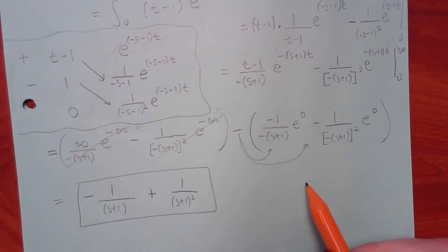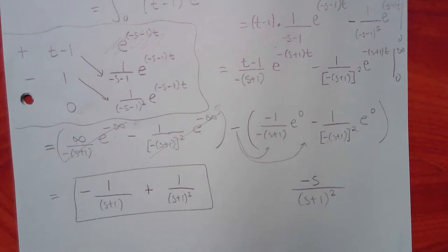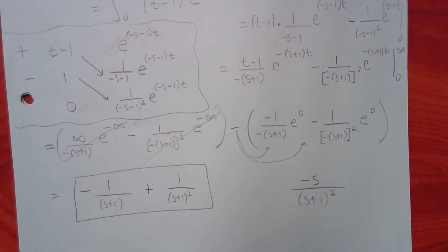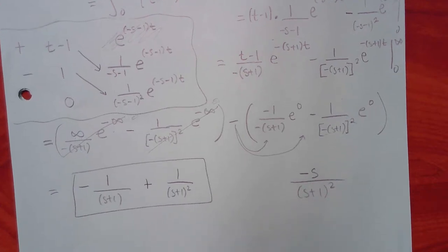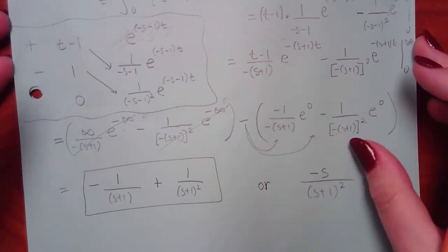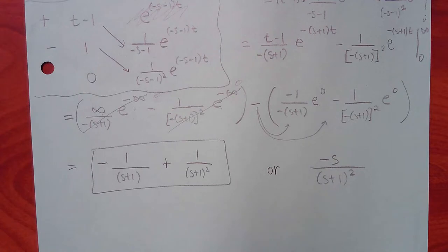Another equivalent form of the answer would be negative s over (s plus 1) squared. You multiply the first term by (s plus 1), the negative transfers giving negative s minus 1, and the negative 1 and positive 1 cancel, leaving negative s over (s plus 1) squared. Either form is acceptable. After evaluating, just stop there. That's problem 1, and with explanation it took less than 12 minutes.